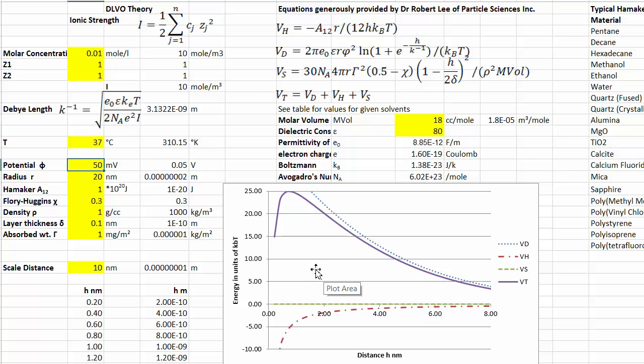But suppose we don't have water, or suppose we can't have a high zeta potential, then we have to use steric stabilization, which is this term here. It depends on the radius, it depends on the distance between them, and it depends on this factor delta, which is the thickness of the stabilizing shell. So if I make that 1 nanometer, you get this very funny charge stabilization shape.